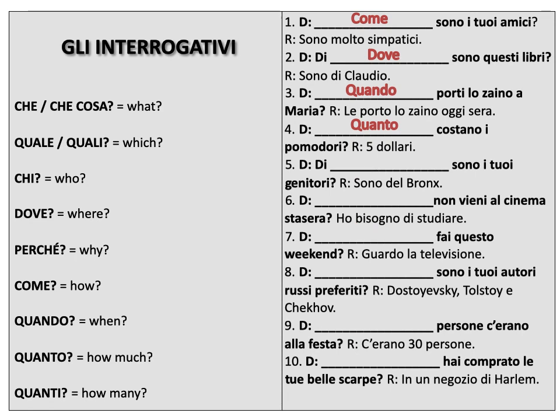Numero cinque. Di blank sono i tuoi genitori — sono del Bronx. We asked this question a lot in the first couple weeks of class. Remember, di dove sei? It's the same thing. Di dove sono i tuoi genitori? Where are they from? Di dove?